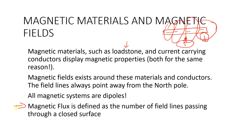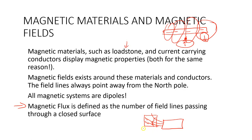Another thing we must be aware of is what we call magnetic flux. With any magnetic material, it's going to have a magnetic field. Magnetic flux is defined as the number of field lines passing through a closed surface. If we had a magnet with its magnetic field going out, and we considered a closed loop enclosing a section, the magnetic flux tells us the number of magnetic field lines passing through that enclosed area.